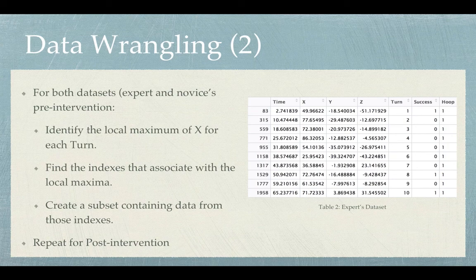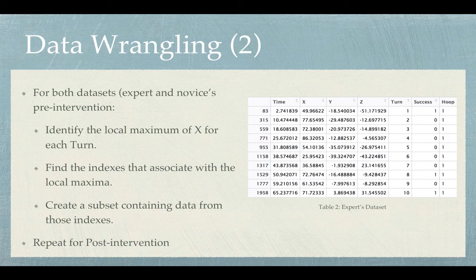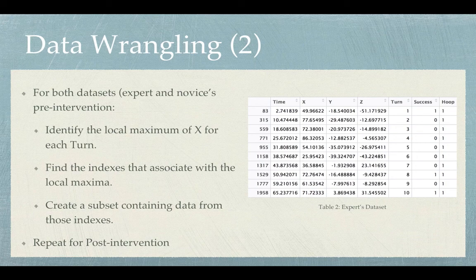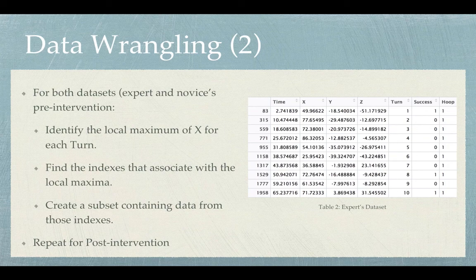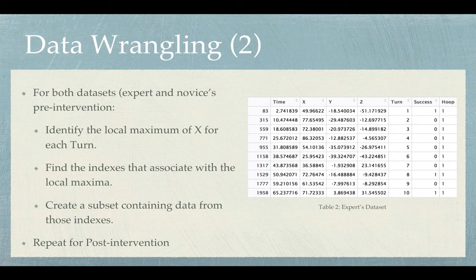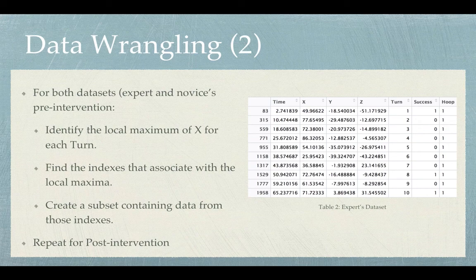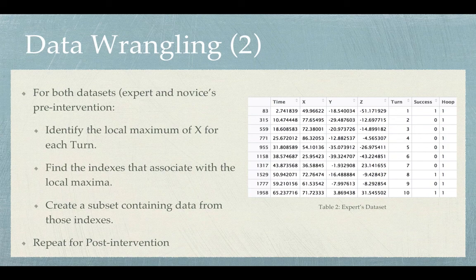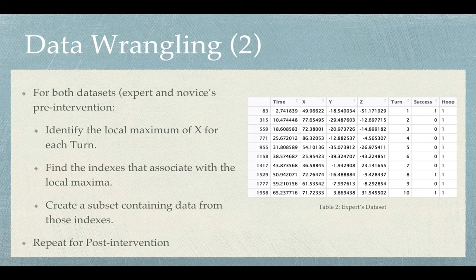Finally, we found that the x dimension is significant in the logistic regression, so we decided to extract the data point based on the maximum value of x. For both data sets, expert and novice pre-intervention, we did the following. First, we identified the local maximum of x for each turn and find the indices that associate with the local maxima, and create a subset containing data from those indices. We did this because, as you recall previously, we have a raw data set containing so much noise, so we cleaned it into a much smaller data set containing only ten data points.